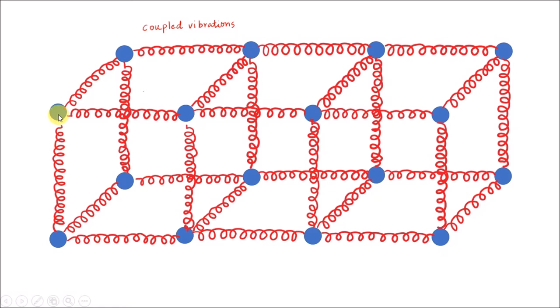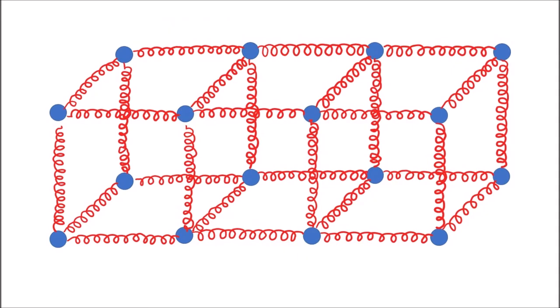In a solid, you have an infinite number of atoms connected among themselves with springs, so it is practically impossible to solve the harmonic oscillator problem for such a large coupled oscillator system. Since in a solid atoms are arranged periodically in a lattice, to a fair approximation we can restrict our problem to the motion of one atom coupled with its nearest neighbors.